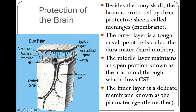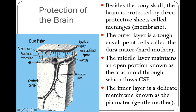The dura mater is really tough — they stick a needle through it to collect CSF, which is done in the lumbar region of the back. They don't want to get into the pia mater because that may damage the spinal column. The needle goes through the skin, through the dura mater, and into the arachnoid process to draw off some cerebrospinal fluid.